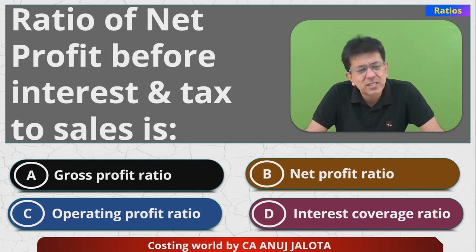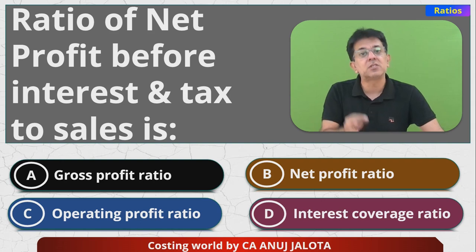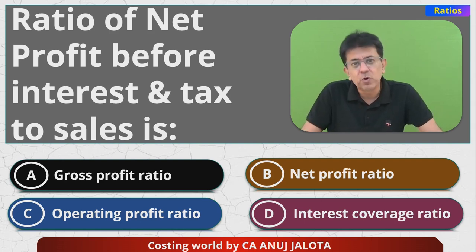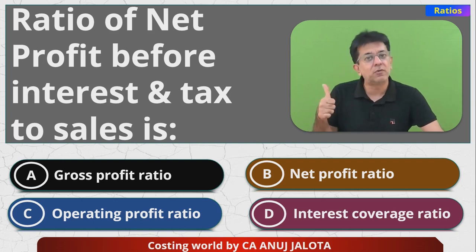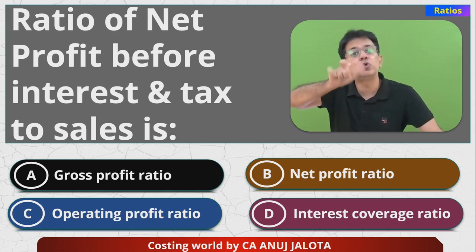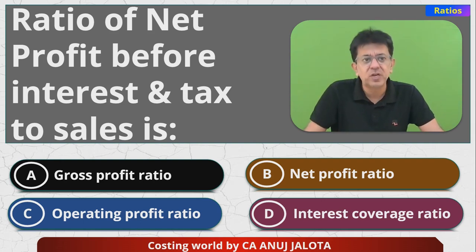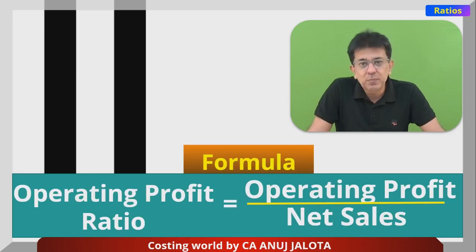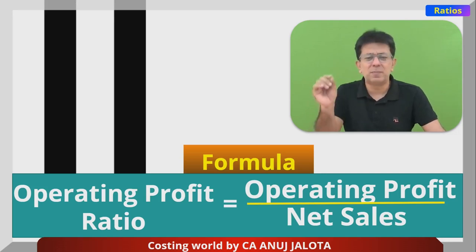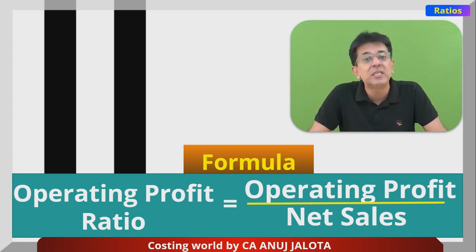Operating profit ratio is the only answer that remains. Operating profit means: by doing the business, how much profit have you earned? So you take profit before interest and tax, and before any non-operating expenses or incomes. Operating profit ratio is calculated as operating profit upon net sales, multiplied by 100 to get a percentage.